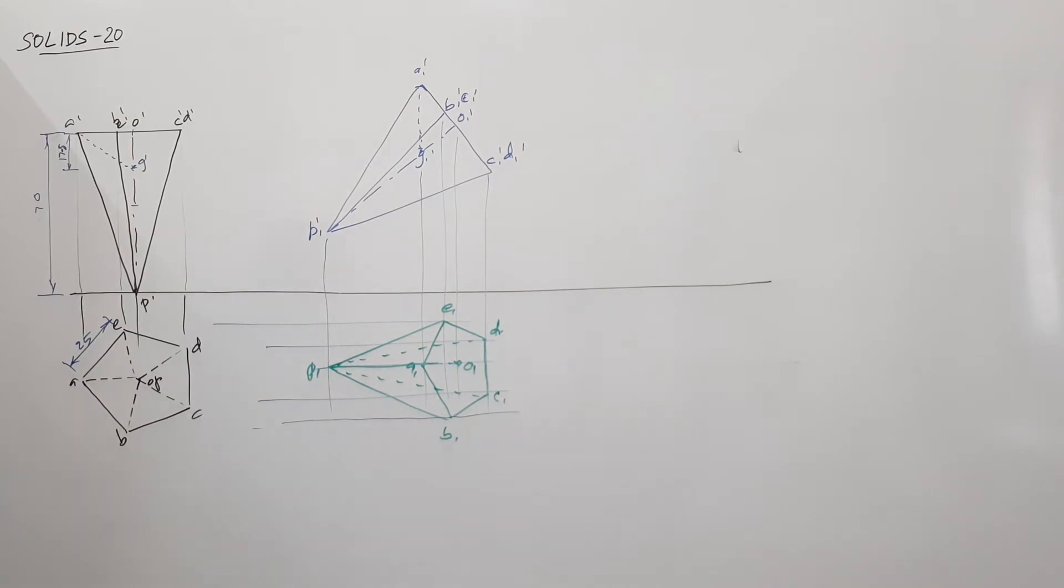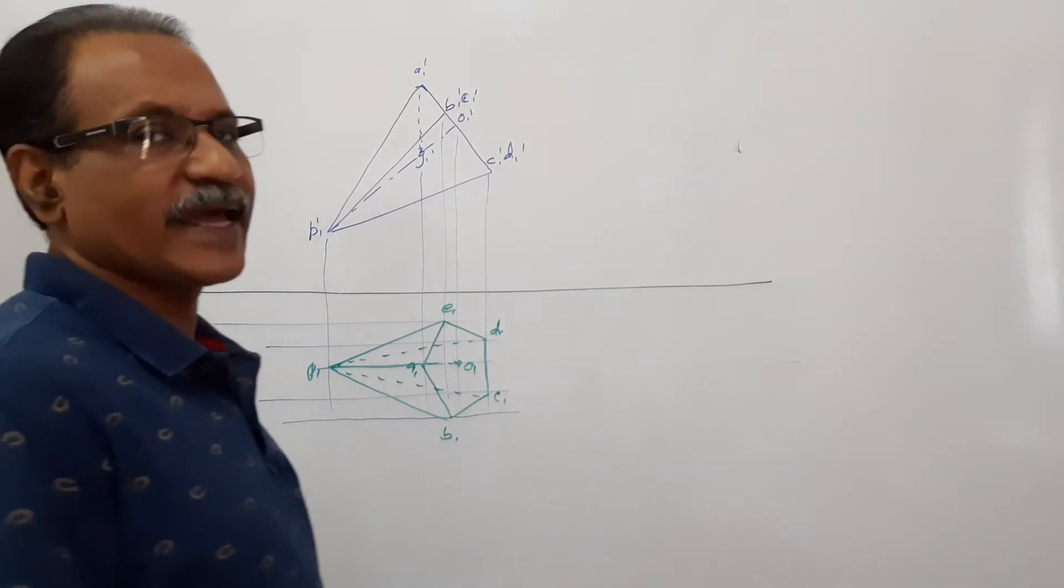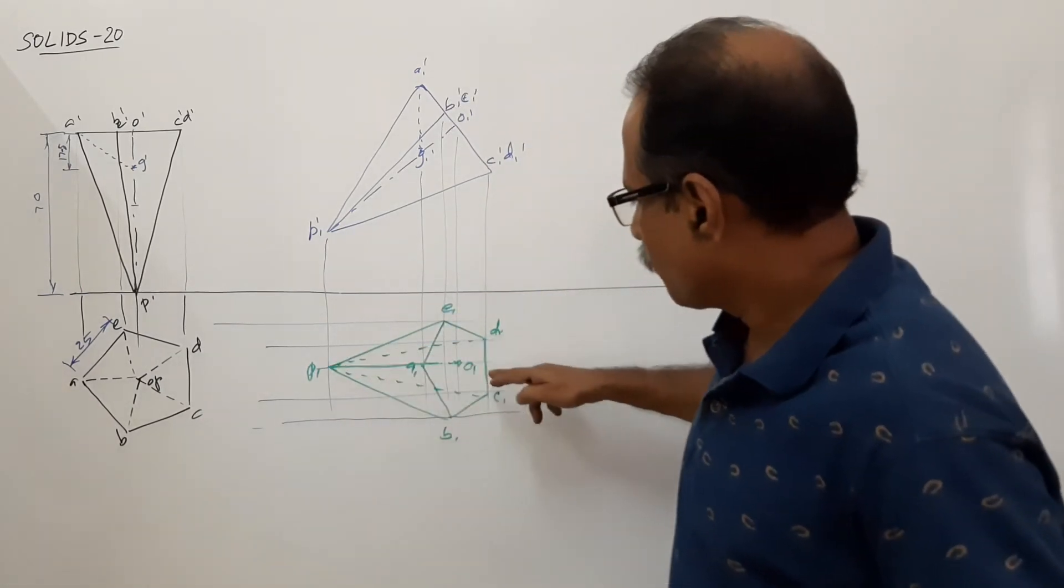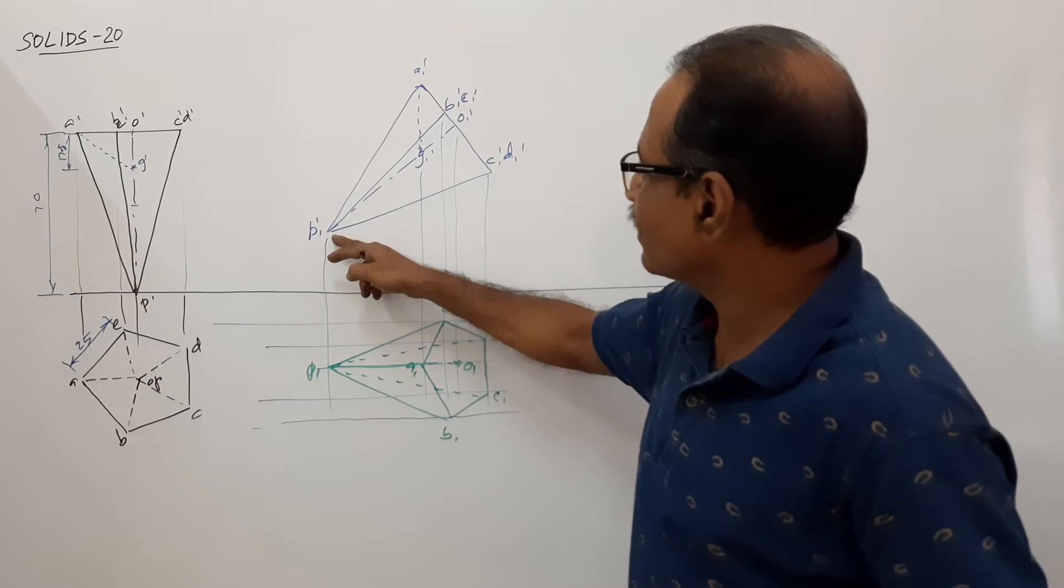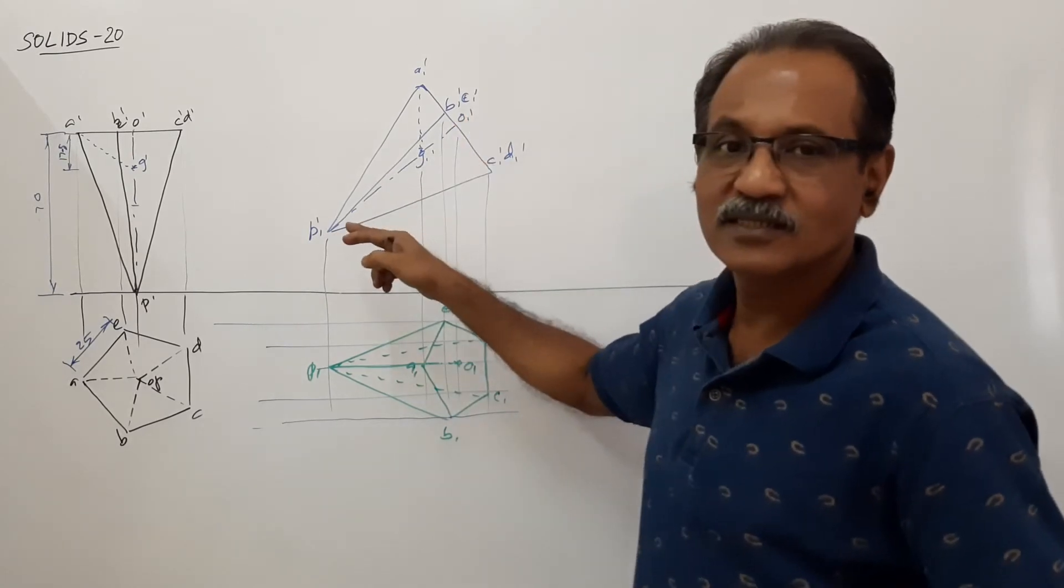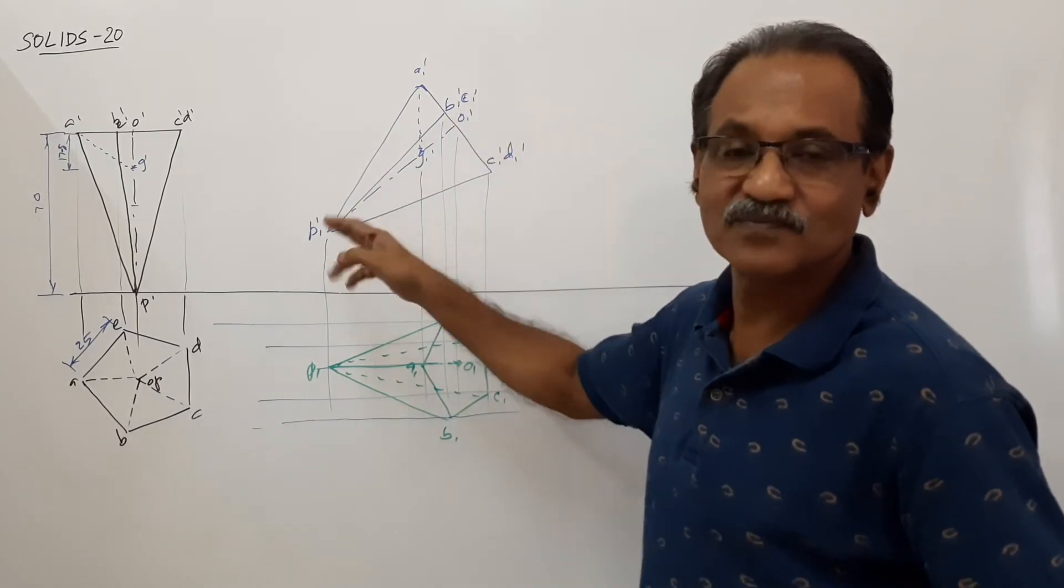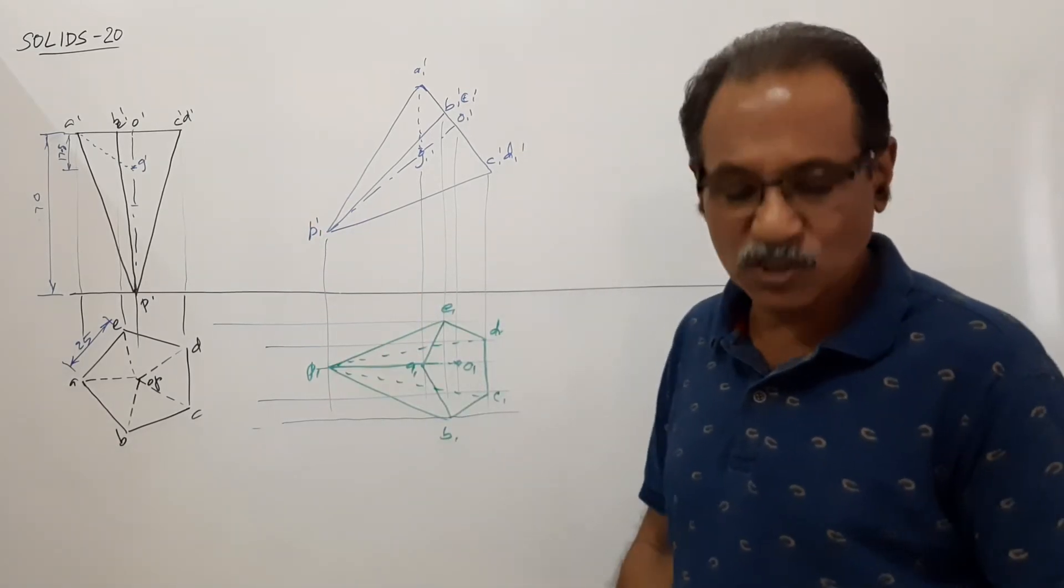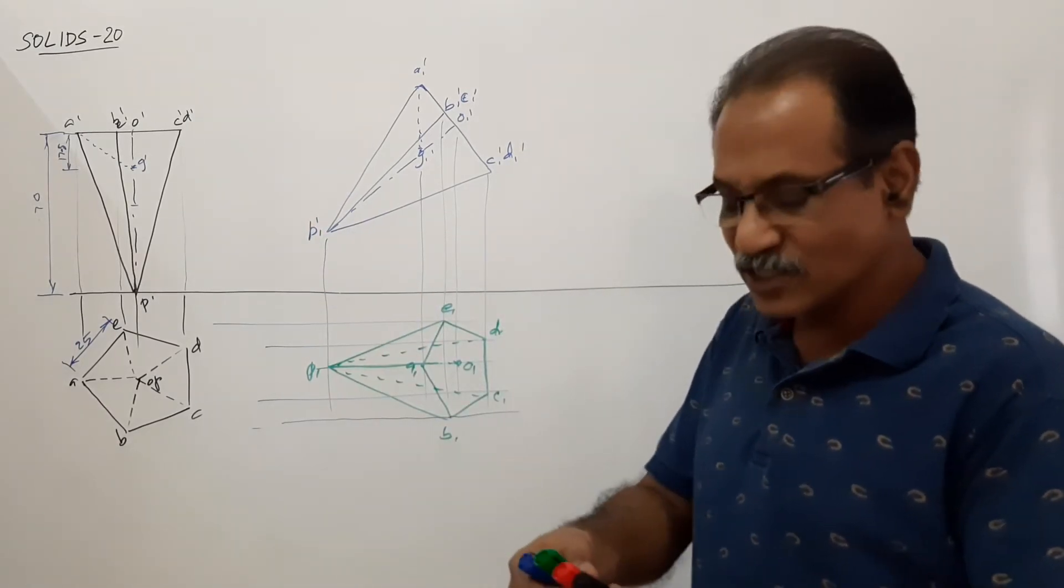How is the pyramid now? The pyramid is suspended by corner A. With the axis parallel to VP. P one, O one, parallel to X Y line. P one dash, O one dash through length. So, what is the axis now? Axis is parallel to VP. What is the inclination of the axis to HP?